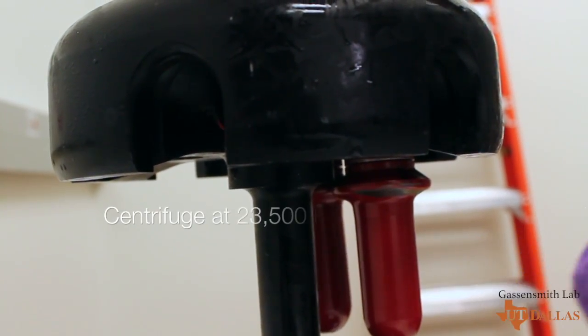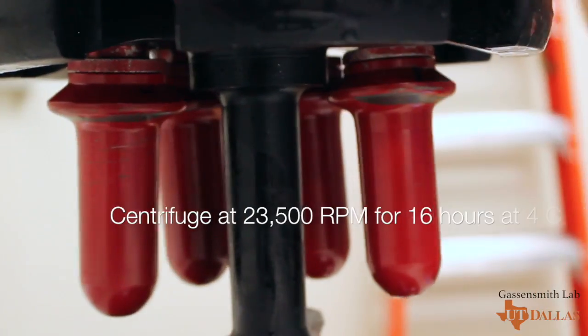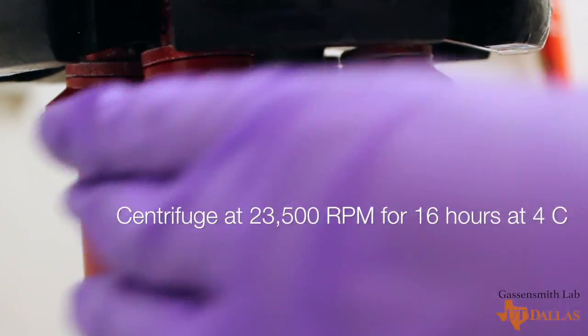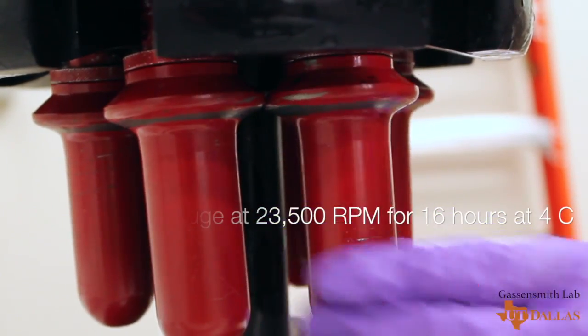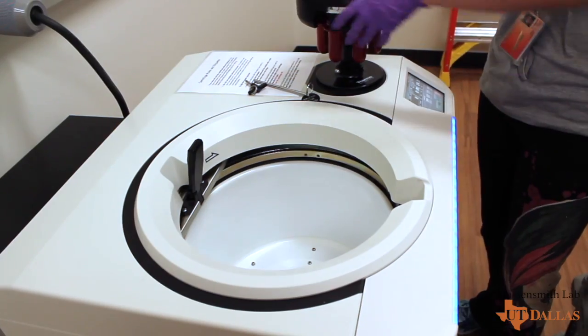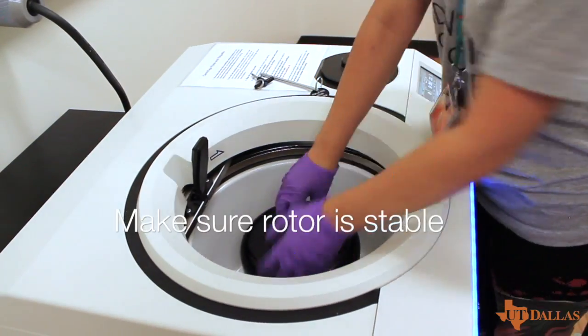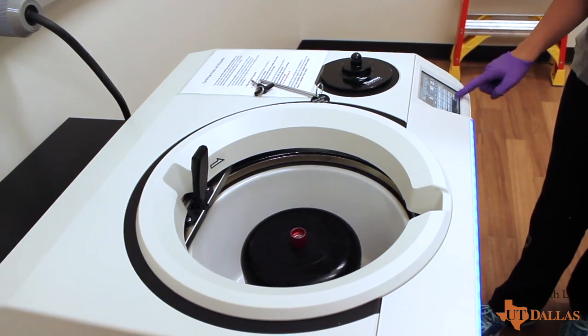Centrifuge these tubes at 23,500 RPM with the Beckman SW28 swing bucket rotor for 16 hours at 4 degrees Celsius with no assisted deceleration. This should approximately take 20 hours to complete.